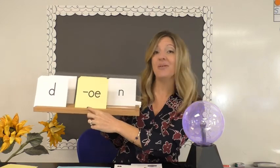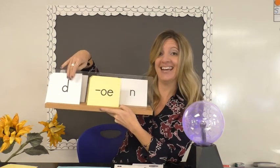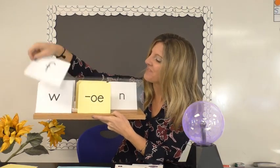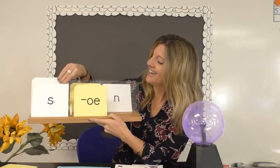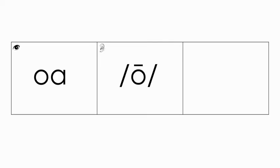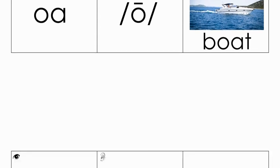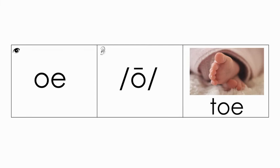You're right, we could never have a guardian consonant at the end of OE because OE is only found at the end of a word. So these would say: 'doe' like a female deer, 'foe' like an enemy, 'whoa,' and 'so.' To summarize: OA says long O, like in 'boat,' at the beginning and middle of a word. OE says long O, like in 'toe,' at the end of a word.